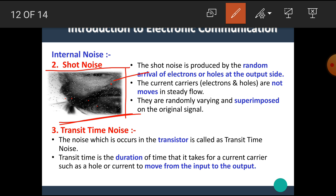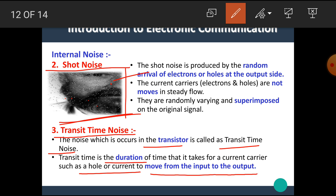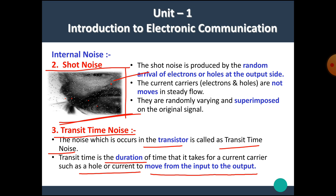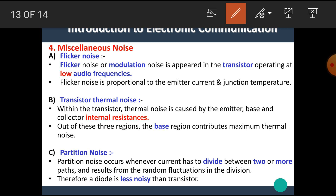The third type of noise is transit time noise. The noise which occurs in the transistor is called transit time noise. Transit time is the duration of time it takes for a current carrier such as a hole or electron to move from the input to the output. Transit time noise occurs in the transistor when charge carriers move from the input towards the output.